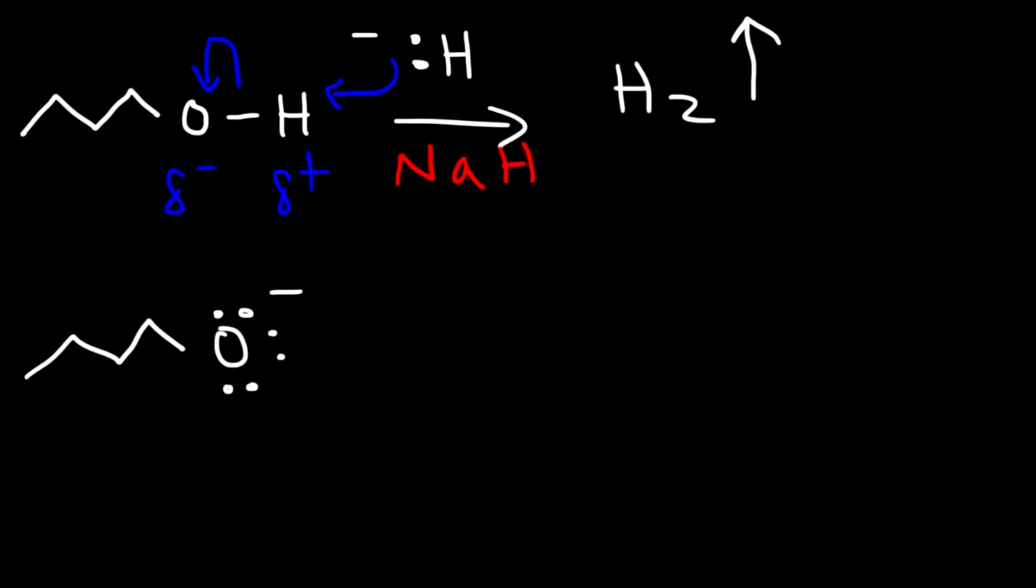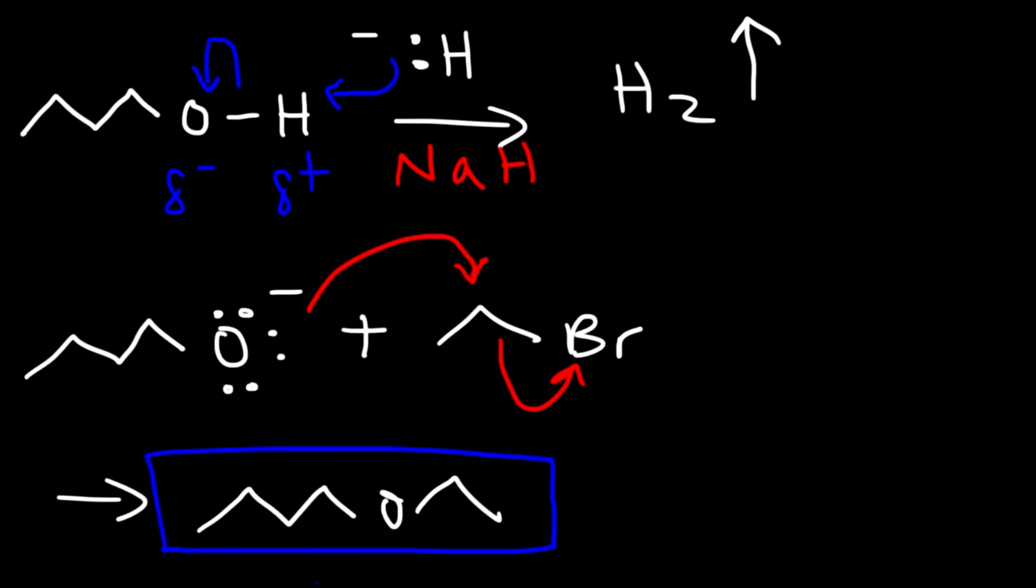Hydrogen gas will leave the solution. It's just going to go up there. And then in the second step we can react this with an alkyl halide like ethyl bromide. This step is an SN2 reaction which means we need to use methyl and primary halides. Secondary halides could favor an E2 reaction. So you don't want to use a secondary alkyl halide. And this will give us an ether. That's the basic idea behind the Williamson ether synthesis reaction.